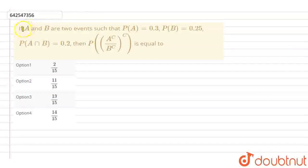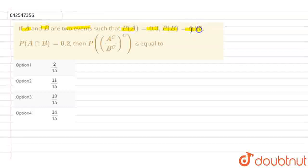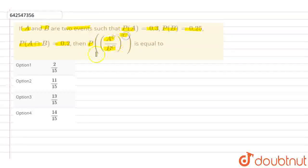In the question, it is given that if A and B are two events such that probability of A equals 0.3, probability of B equals 0.25, and probability of A intersection B equals 0.2. We have to find the probability of (A^C / B^C)^C, and the options given are 2/15, 11/15, 13/15, and 14/15.